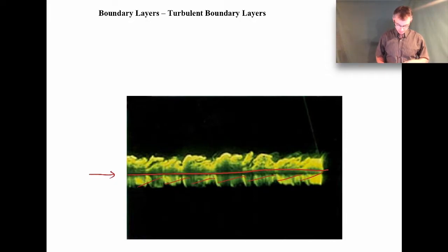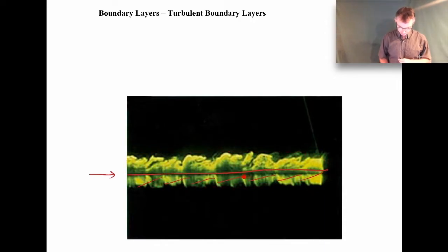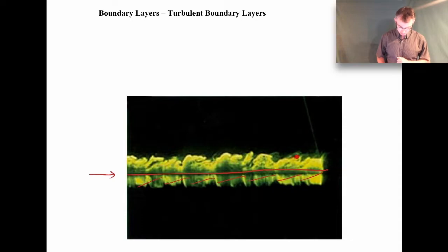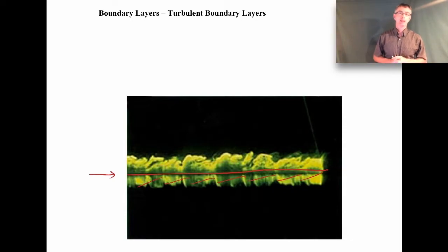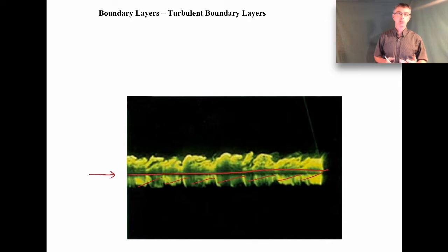The flow field is obviously complex. The reflection down below is just a mirror image in the plate. You can see it's quite complex and it's actually an unsteady flow — if you took snapshots at different instances in time, the pictures would look different.